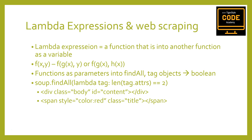Beautiful Soup allows us to pass certain types of functions as parameters into the find_all function. The only restriction is that these functions must take a tag object as an argument and return a boolean. Every tag object that Beautiful Soup encounters is evaluated by this function, and tags that evaluate to true are returned while the rest are discarded.